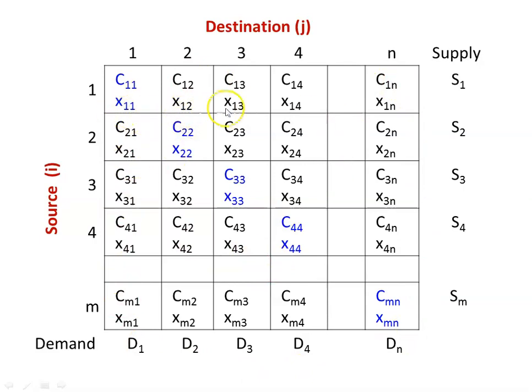The values x11, x12, x13 are the allocations — the number of items we will transport from each source to each destination — which we finalize in the solution procedure. The cost matrix will be given, the supply capacity of each source will be given, and the demand requirement of each destination will be given. We must transport items from source to destination based on requirements to minimize the transportation cost.